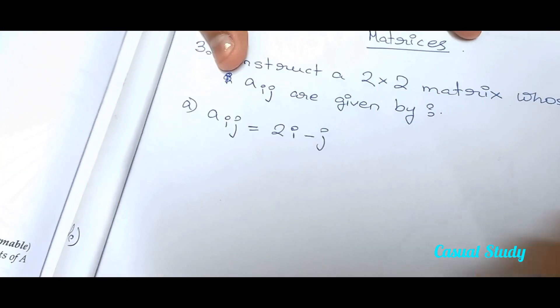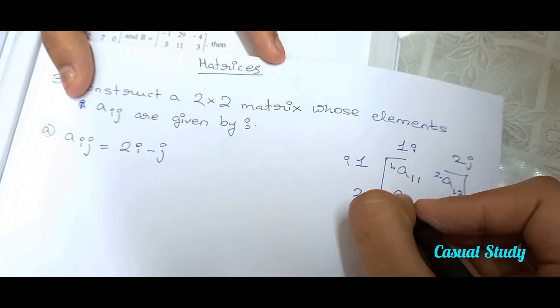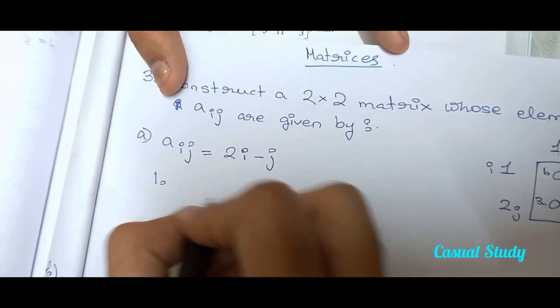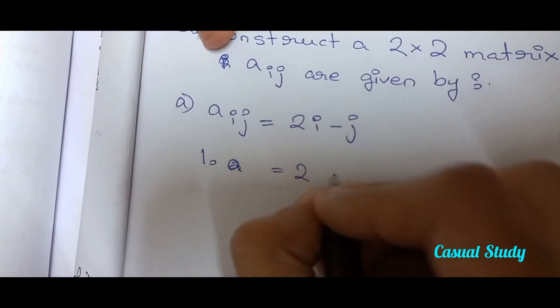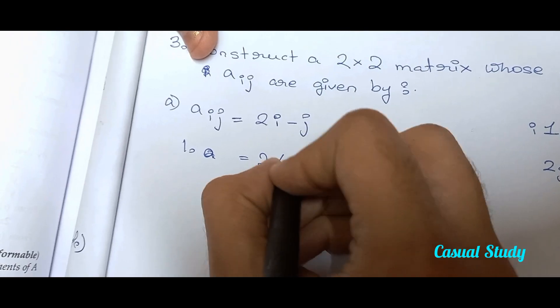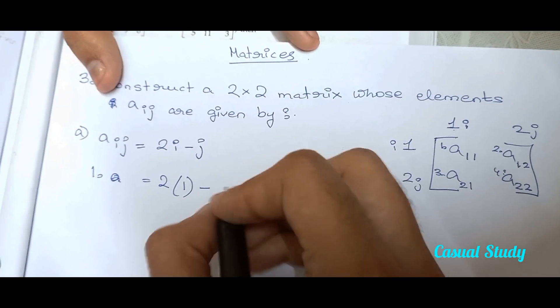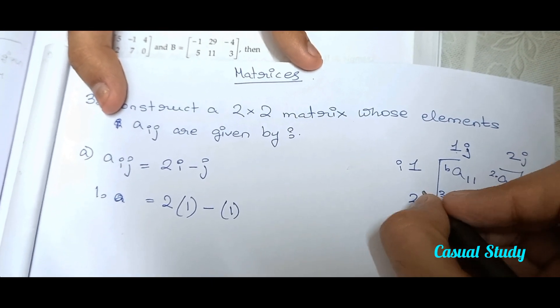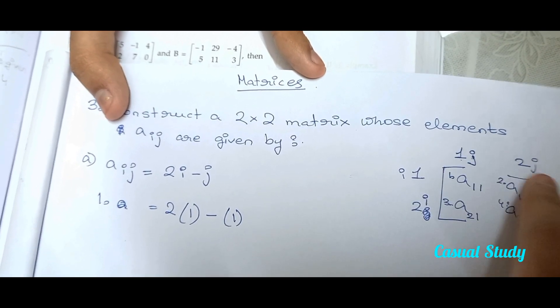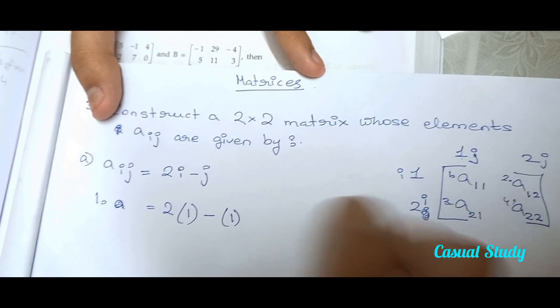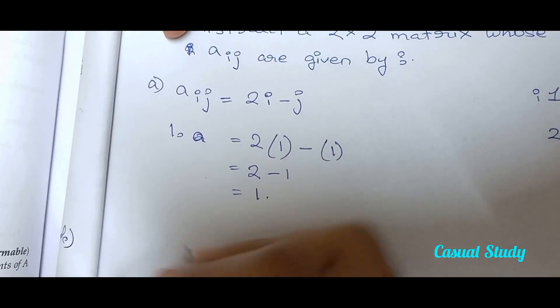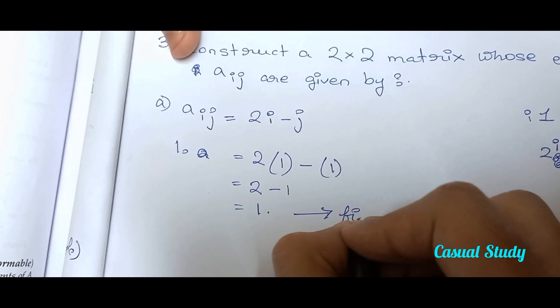So now we come back to this equation. For the first element — I've given them numbers 1, 2, 3, 4. For element 1, it's going to be 2 into i. I's value is 1, so 2 into 1, minus J's value which is also 1. The rows are i and the columns are j. So this element will be 2 times 1 minus 1, which equals 1. The first element is 1.